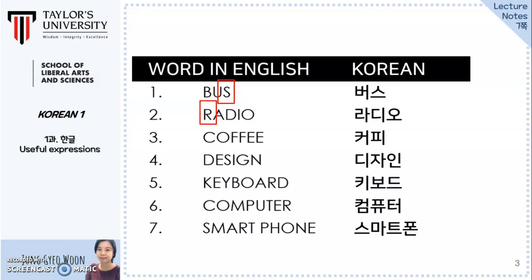Number three: Coffee. In Korean, there is no F consonant, therefore it is written as P. Coffee. Even though the English spelling shows the vowel O, a different vowel O is used in Korean. Coffee.